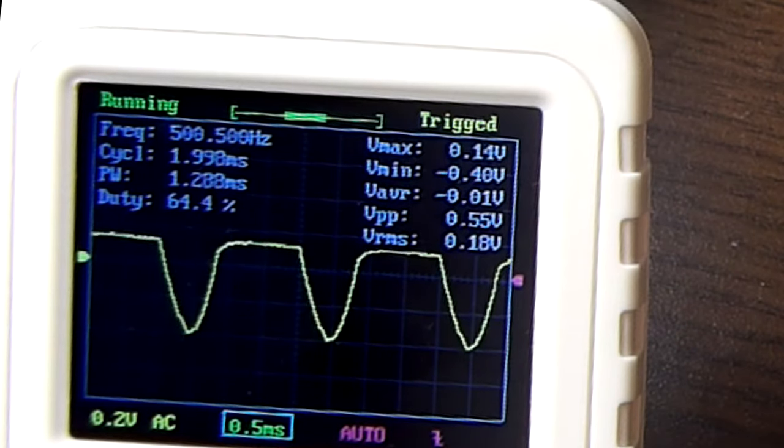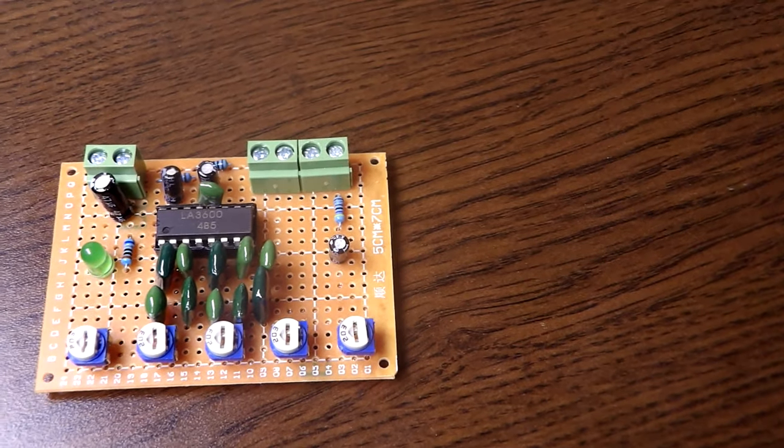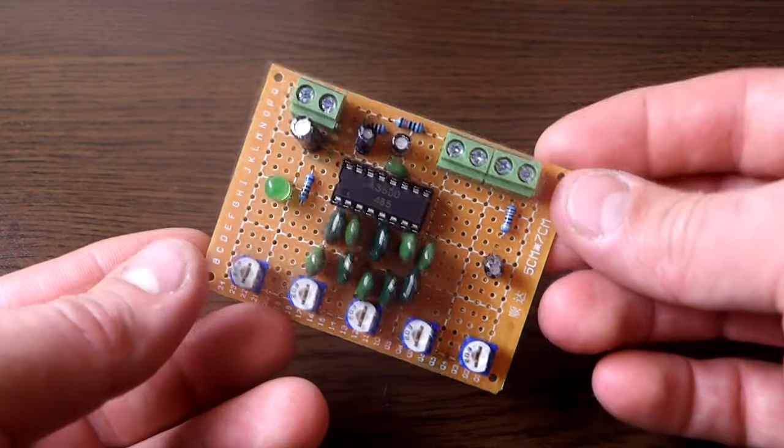As you can see, the circuit is working great. It can be modified to work with two LA3600s for a 10-band graphic equalizer, but that's a subject for another video.